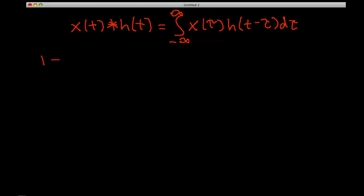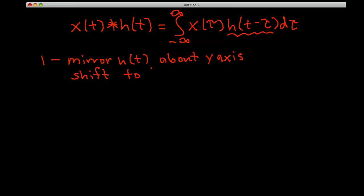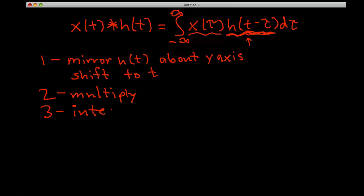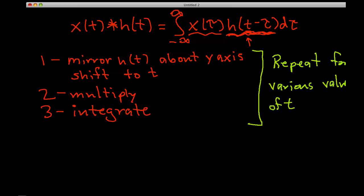Step 1 is to flip and shift h of tau. The t minus tau in h of tau has the effect on the tau axis of flipping, or mirroring, h about the value tau equals 0, and then shifting right by t. Step 2 is to multiply the two signals together — x of tau by h of t minus tau. Step 3 is to integrate the product of x and h, which essentially involves getting the area under the product.